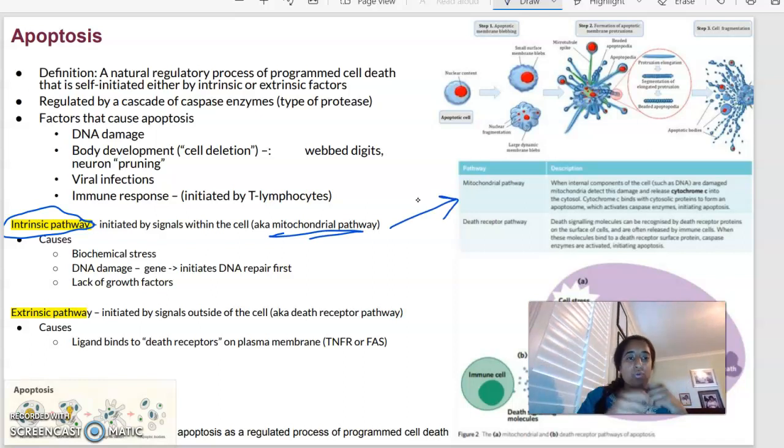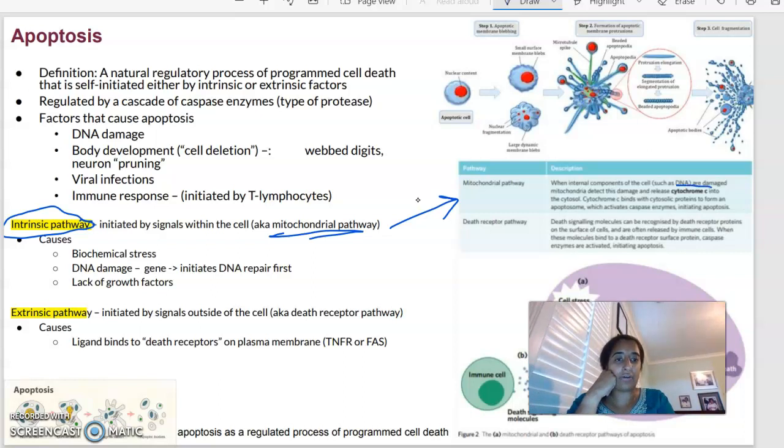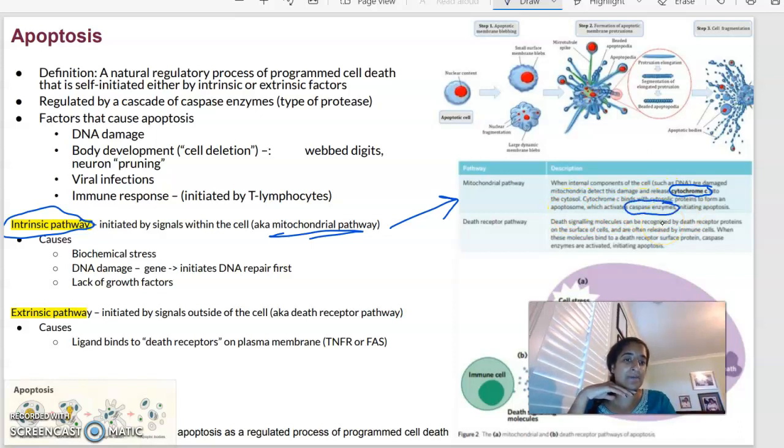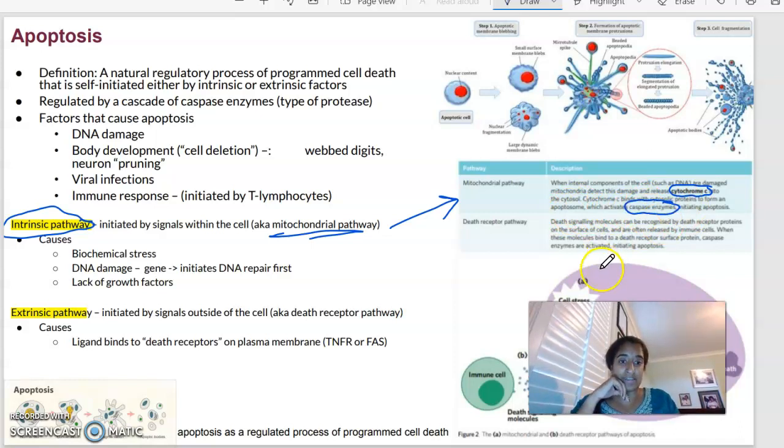And that's basically where the internal components, like the DNA, is damaged in the cell. The mitochondria will be the things that detect that damage, hence why it's called the mitochondrial pathway. And they release what we call cytochrome C. Cytochrome C is going to bind with particular proteins, and it's going to form apoptosums, which is going to activate what we call these caspase enzymes that are going to initiate this apoptosis.